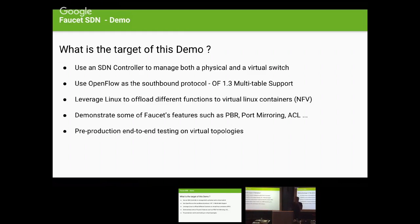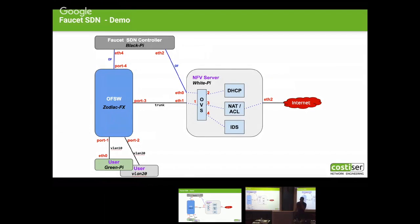Faucet works only with OpenFlow 1.3 that has multi-table support. I want to demonstrate Faucet features such as policy-based routing, port mirroring, ACL, and so on. Last but not least — I won't have time for it today, but what I wanted to do was create the entire physical setup as a virtual environment. You can run the same tests in a virtual environment, so basically before you go to launch something in production, you can test your policies and changes on a virtualized network — what software engineers call 'push on green.'